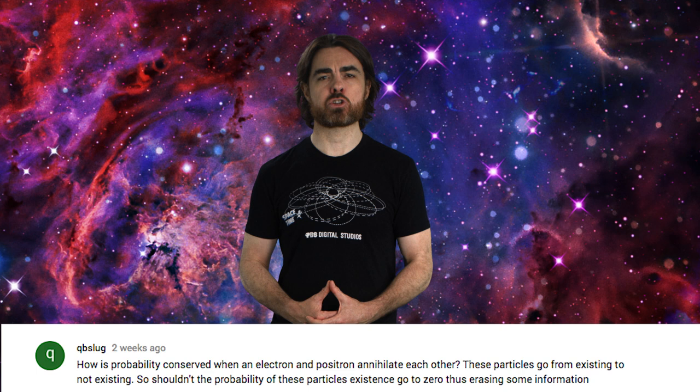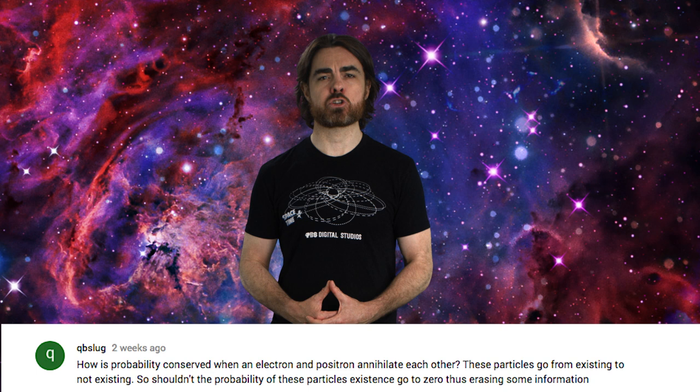In our last episode, we looked at what might be the most fundamental rule in quantum mechanics, the conservation of quantum information. You guys had a lot of questions. Let's see what you had to say. QB Slug asks a tricky one. How is probability conserved when an electron and a positron annihilate each other? In our discussion during the episode, we talked about the unitary evolution of a one-particle wave function. We said that there's always a 100% chance, for example, that the particle position always has some value. So what if the particle is destroyed? Well, particle creation and annihilation is described by quantum field theory, and unitary evolution and the conservation of probability and information still works there. QFT describes the evolution of quantum fields in which particles are excited states. Now, it's the evolution of the fields, not the particles, that conserves probability.